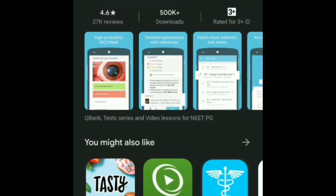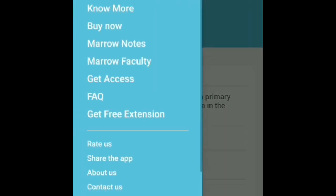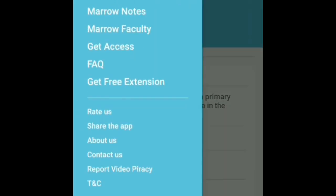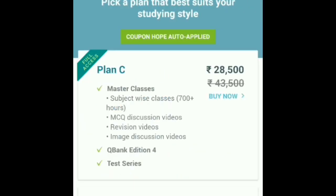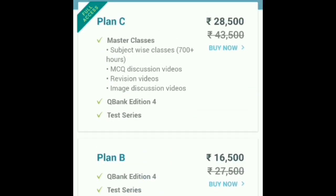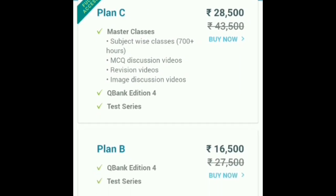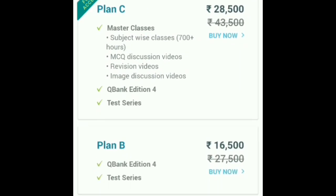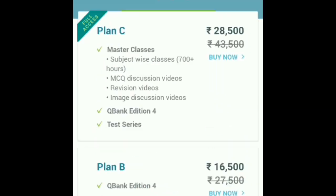Mirror app is already installed, so let me open it. Here we go. You can see different options like 'No More' and 'Buy Now.' In Buy Now, you can get different packages — Plan B and C. Plan C has all video lectures, Q bank, test series, and notes. Plan B has only Q bank and test series.